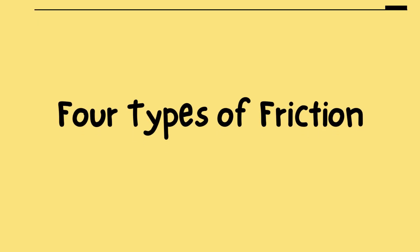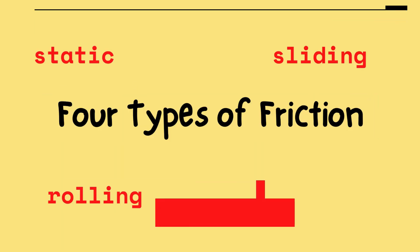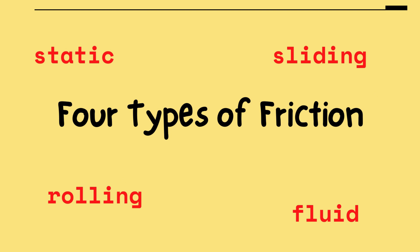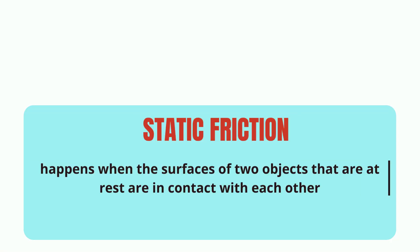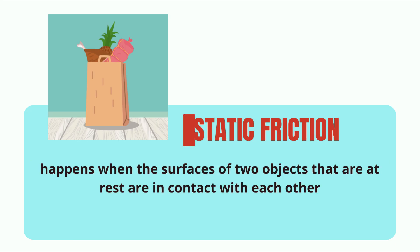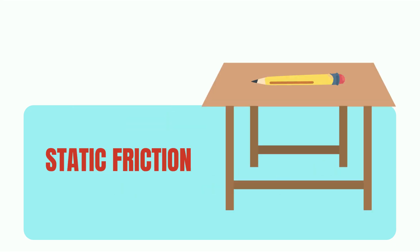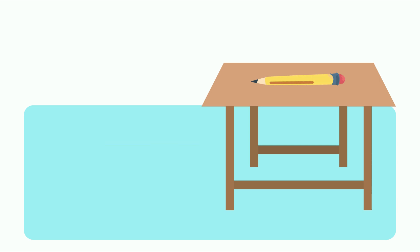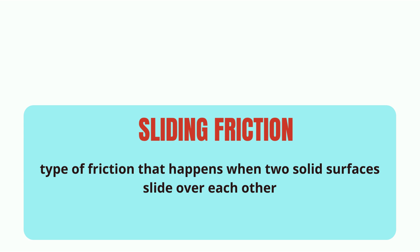There are four types of friction: static, sliding, rolling, and fluid friction. Static friction happens when the surfaces of two objects that are at rest are in contact with each other. For example, the bag on the table, the books on the shelf, and the pens on the desk all have static friction between them, even though they are not moving.